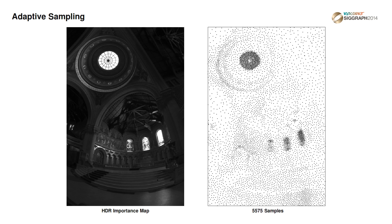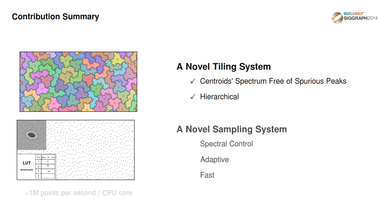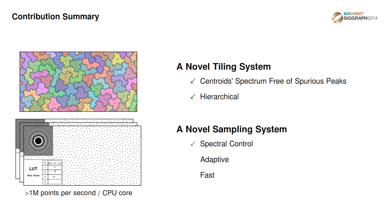For more results and comparisons, please refer to the paper. In summary, our contribution involves a novel hierarchical tiling system whose tile centroids form a spectrum free of spurious peaks, and a novel sampling system based on this tiling allowing full spectral control, able to generate several million samples per second for both uniform as well as adaptive distributions. For more details, please refer to the paper. Thank you for watching.